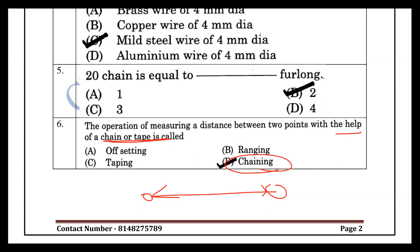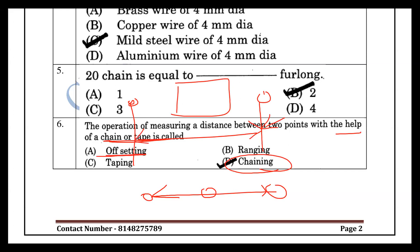In chaining, we arrange ranging to establish intermediate points. The offset is the lateral distance between the chain line and a point on the object. If we are doing an offset, the lateral distance from the chain line to the object is measured — that is offsetting.